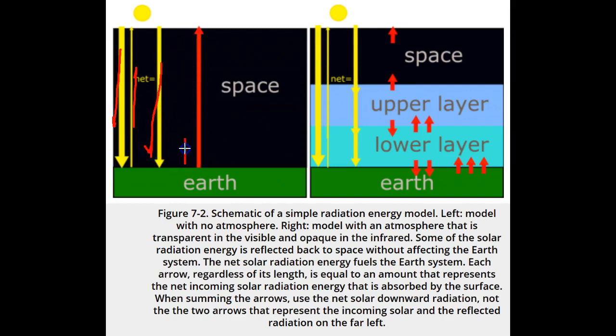Let's represent that amount of energy with a single arrow. At the Earth's surface, and at all levels above, there is one arrow coming down and one arrow going up to maintain radiative equilibrium.